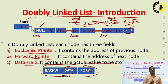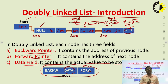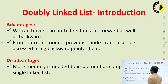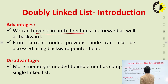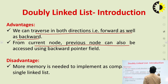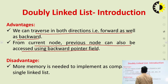So why do we use a doubly linked list? Because we can traverse in both directions — forward direction as well as backward direction. And from any node, we can get the address of its previous node and next node. As for advantages: traverse in both directions, that is forward as well as backward, and from the current node, the previous node can also be accessed using the backward pointer field.